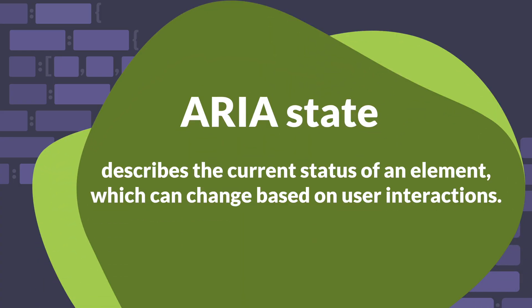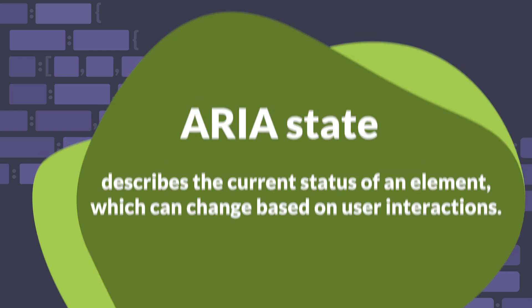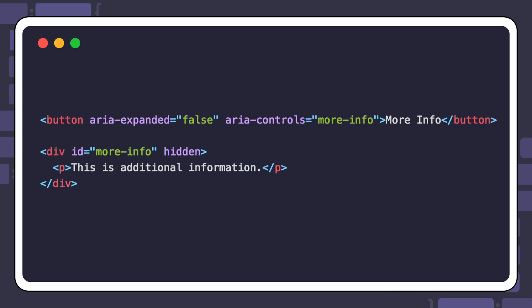ARIA state describes the current status of an element, which can change based on user interactions. An example is the ARIA expanded attribute for collapsible sections. This is merely describing the state — it does not provide any functionality. You would have to use JavaScript to change the state of the attribute when the user clicks the button.